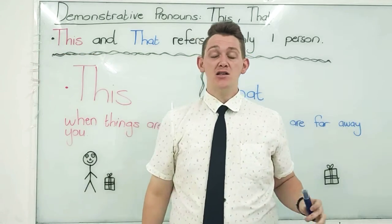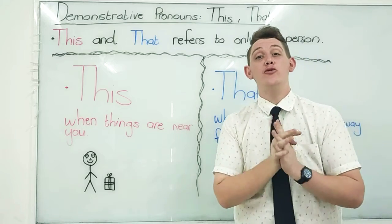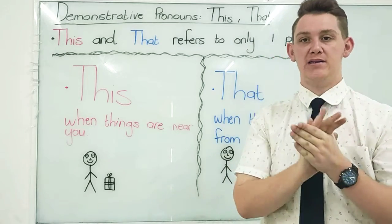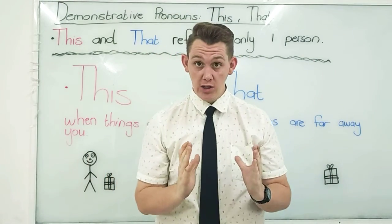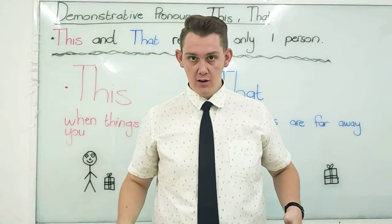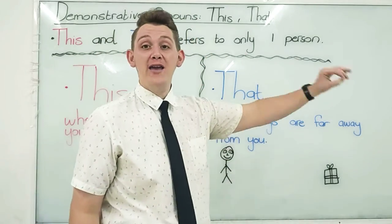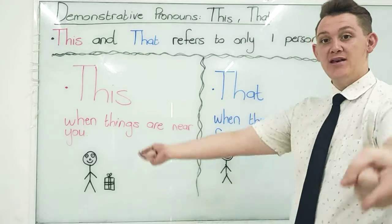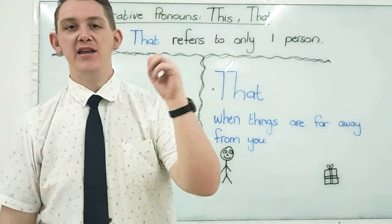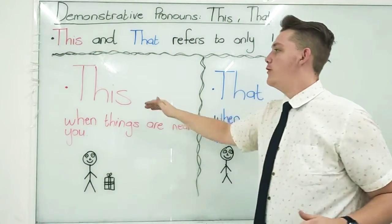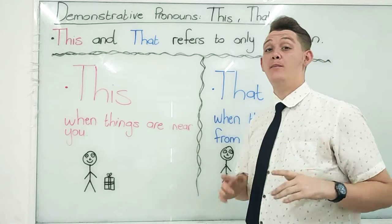Alright guys, so remember these rules always: "this" — when something is close to you, here. And "that" — when it is far away from you, there. And remember as well, when we use "this" and "that," it refers to only one person or one thing.